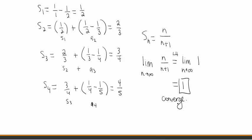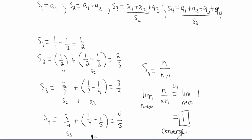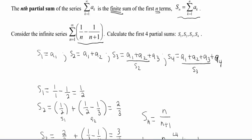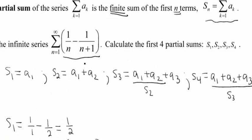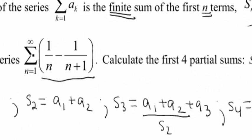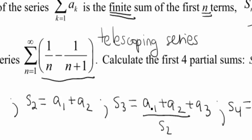This will not always happen. This type of series—since we're summing things, this is a series—this 1/n minus 1/(n+1) has a special name: it's called a telescoping series. Thank you for watching.